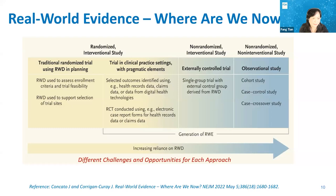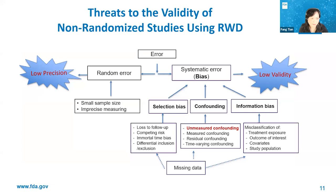It has been six years since the launch of the 21st Century Cures Act. The use of real-world data and real-world evidence has greatly increased and expanded from post-marketing safety studies to pre-marketing studies with different study designs and different challenges. This diagram outlines challenges for non-randomized non-interventional studies in terms of study validity and precision. Unmeasured confounding bias is one of the most important threats as we conduct real-world studies on drug safety and effectiveness.